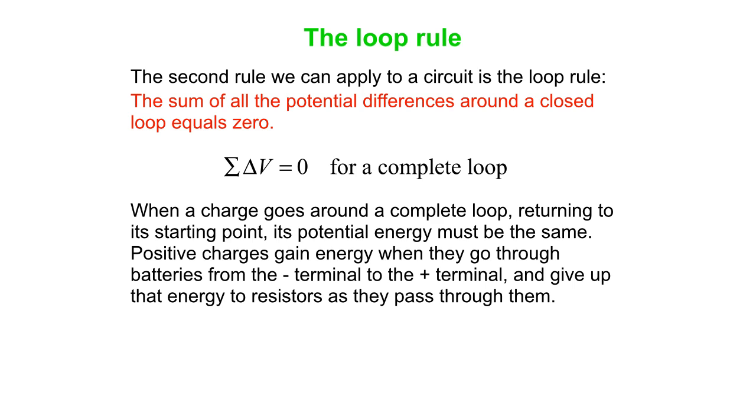So, if we imagine positive charges going around a circuit, then they gain energy when they go through batteries, and they give up that energy to resistors as they pass through them. Remember, we have a lovely ski hill analogy for this, where the chairlift is the battery, skiers are the charges, ski trails are the resistors.